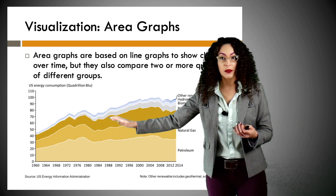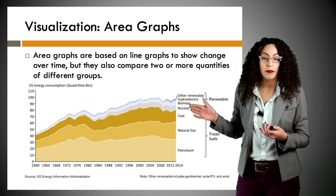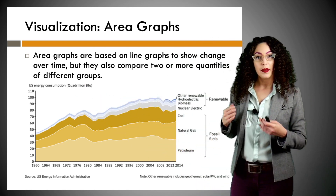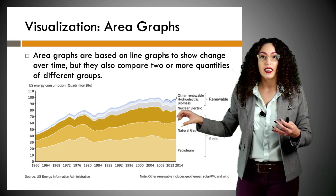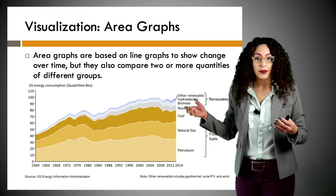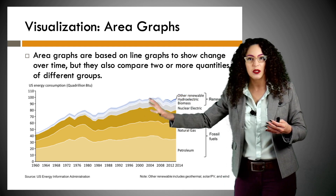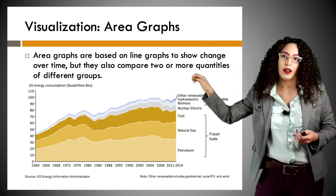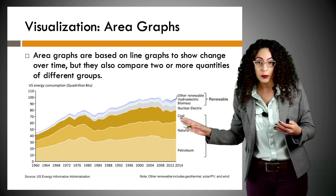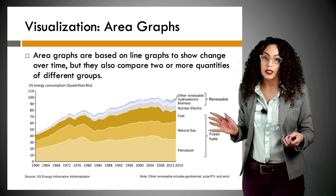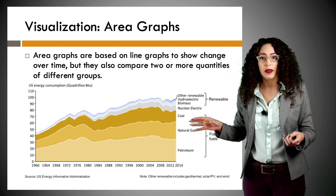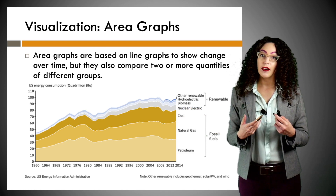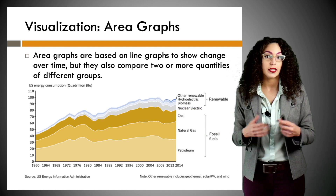Next up we have area graphs. If you were to take out all these areas, it would look very much like a line graph, so they also show time. On the x-axis we have time, on the y-axis we have US energy consumption. This allows us to compare two or more quantities of different groups. The top line shows the average total fuel consumption going steadily up. We can also see which groups contribute most — right now it's fossil fuels: coal, natural gas, petroleum — and we're starting to see some renewable energy, with one little sliver for nuclear. Area graphs are really good for showing change through time and comparing quantities of different groups.